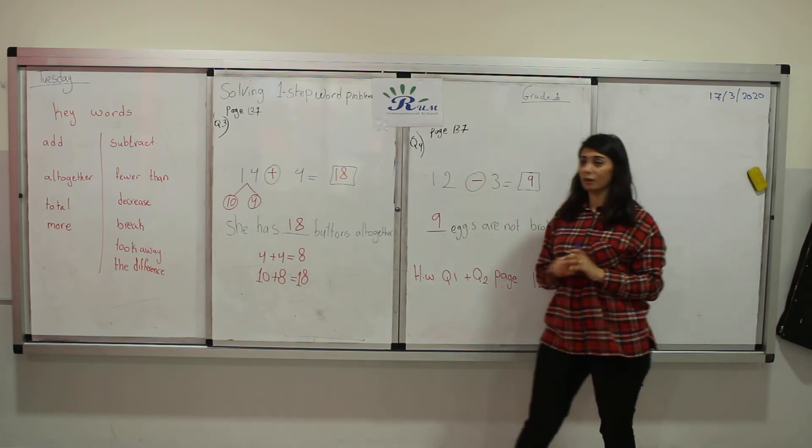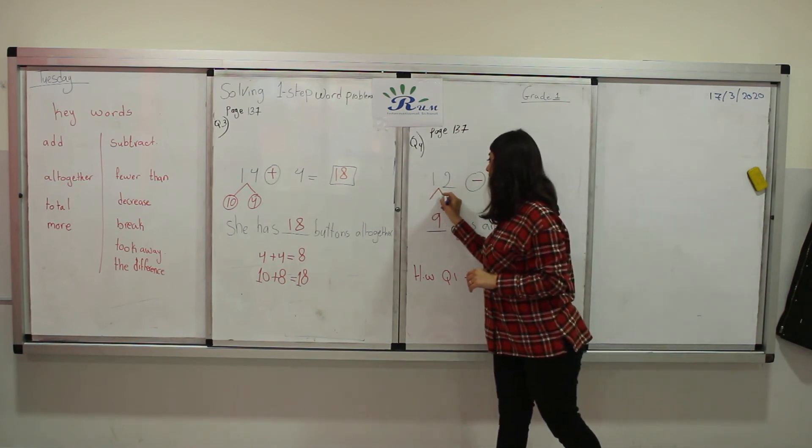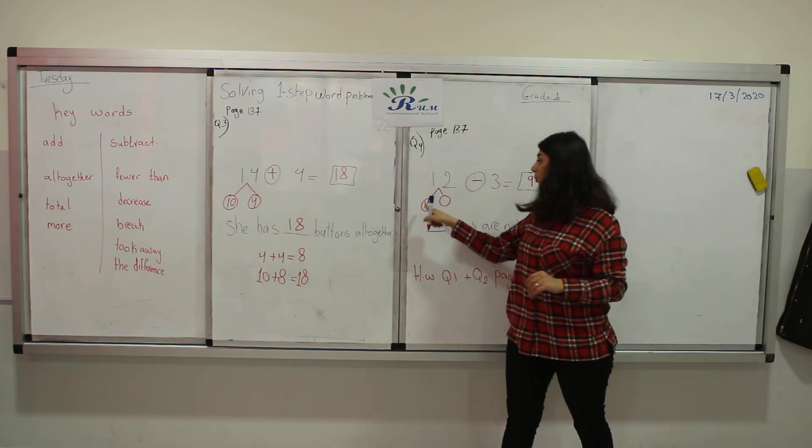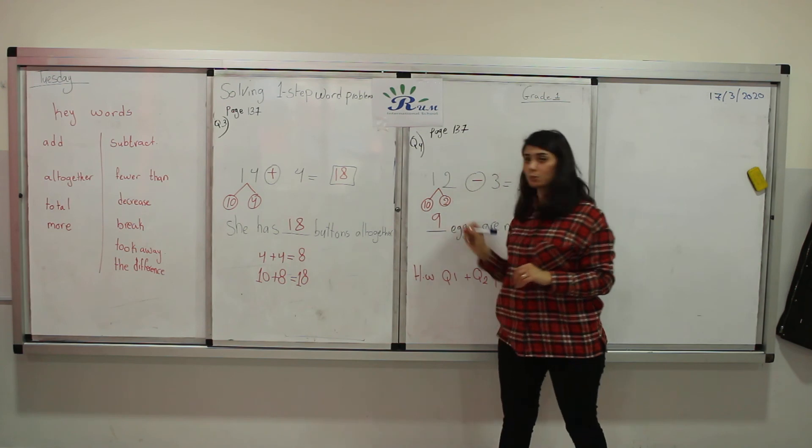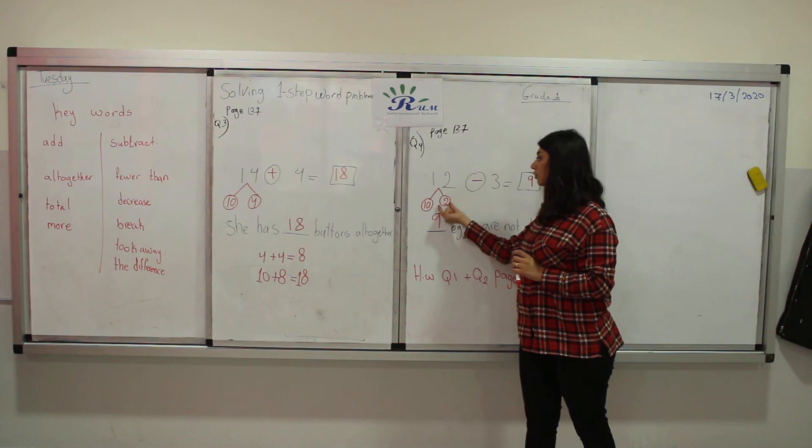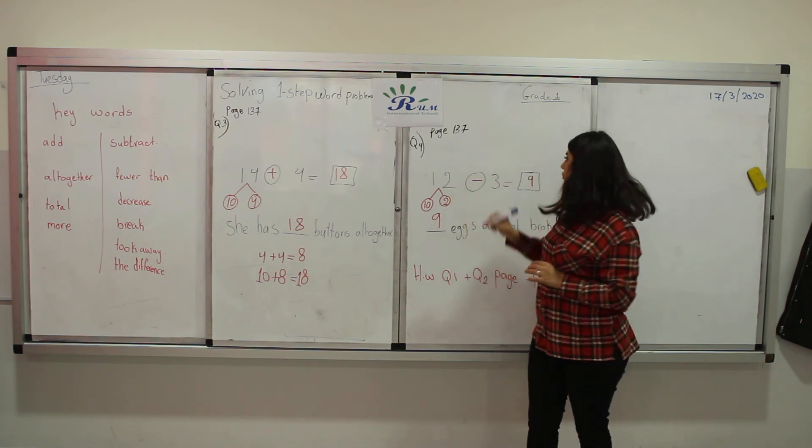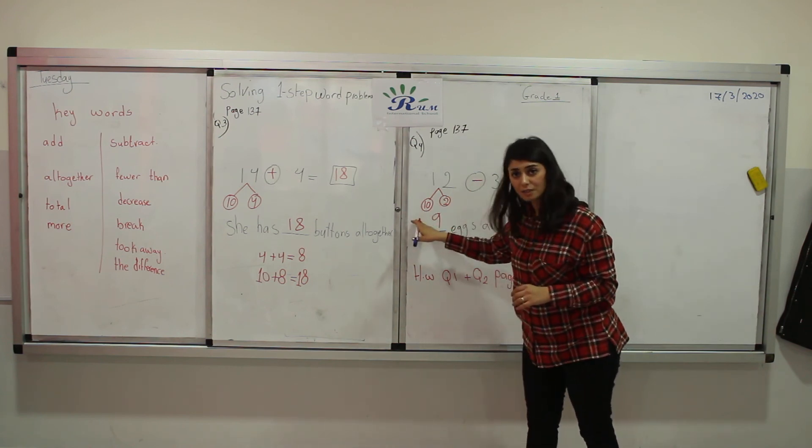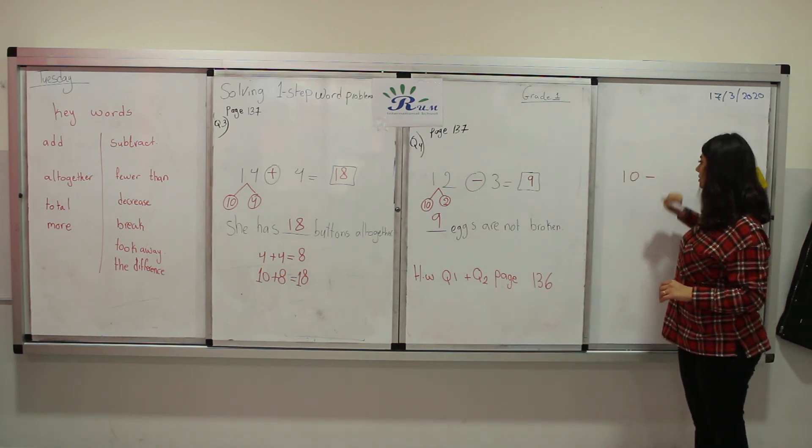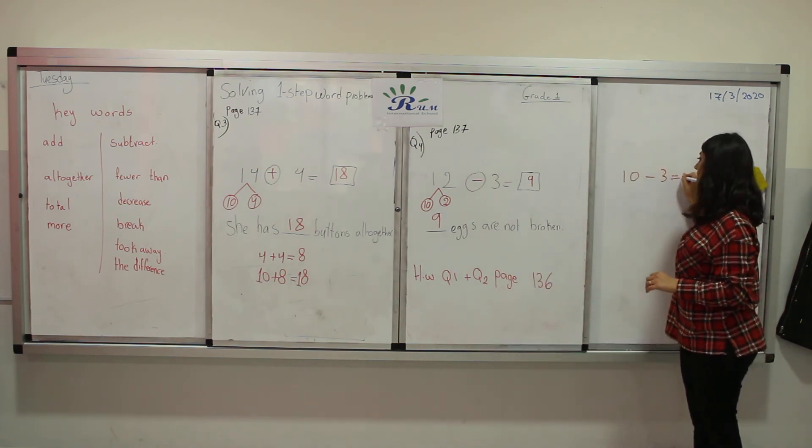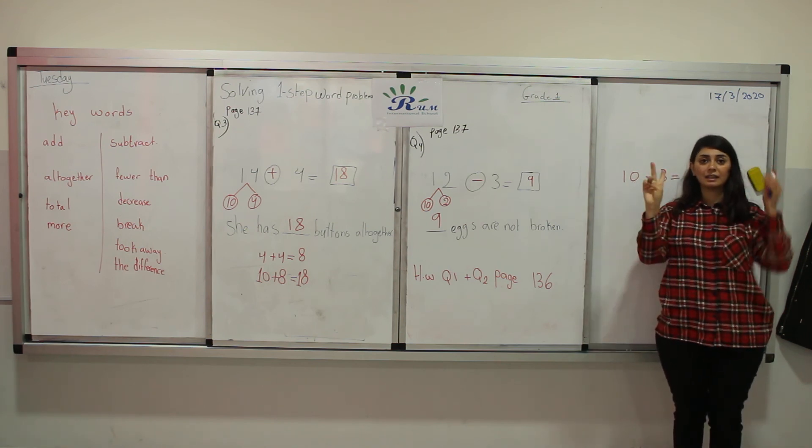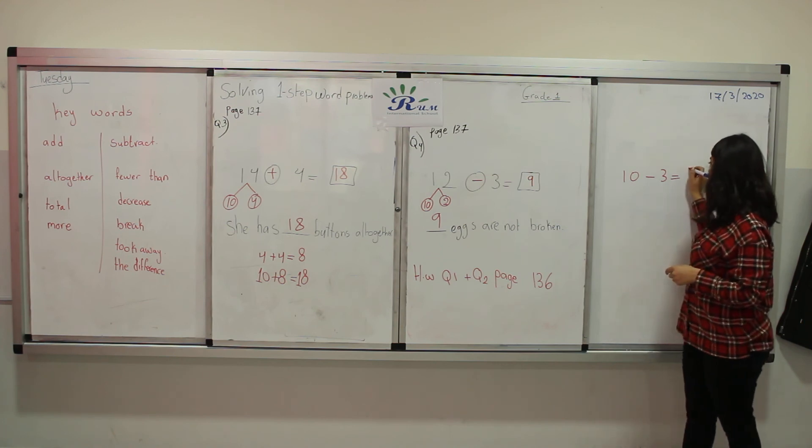Or we can partition it. Do tens and ones. 12 has 1 ten, 2 ones, as we already said before. Can we take away 3 from 2? No. So we will go to the tens. 10 minus 3. 10 in our head, 3 on our fingers. 10, 9, 8, 7. The answer is 7.